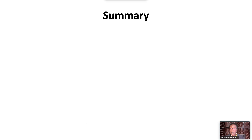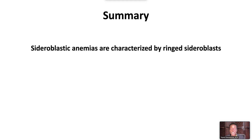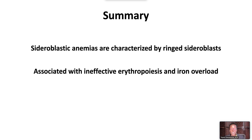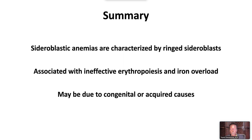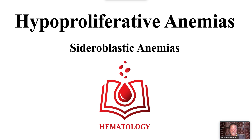In summary, sideroblastic anemias are characterized by ring sideroblasts in the bone marrow aspirate. Sideroblastic anemias are associated with ineffective erythropoiesis and iron overload. Sideroblastic anemias may be due to congenital or acquired causes. This ends our video on hypoproliferative anemias, sideroblastic anemias.